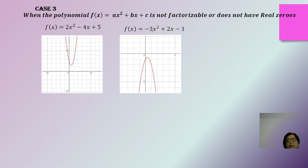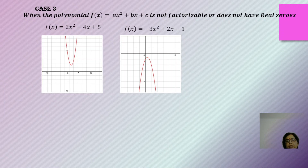If the polynomial ax² + bx + c cannot be factorized into two real zeros, we get complex numbers and the graph of the quadratic will not intersect the x-axis at any point. If the coefficient of x² is positive, it will be opening upwards.